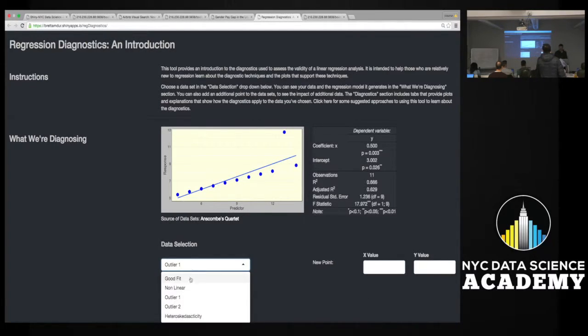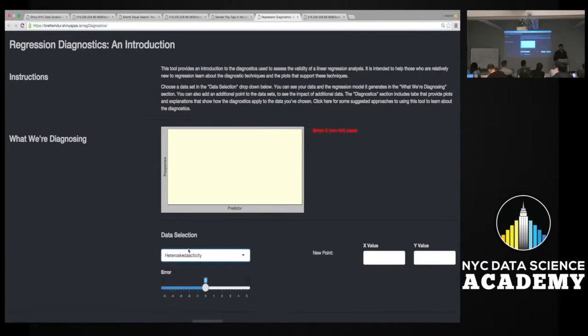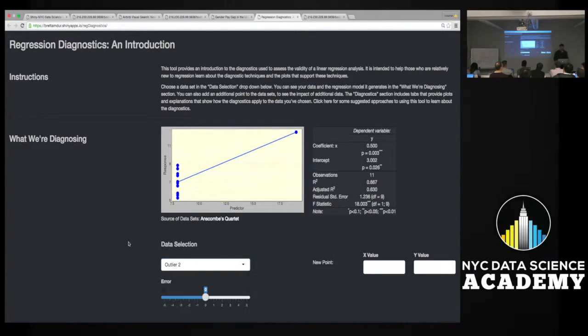And then finally, the fourth piece of Anscombe's dataset. Once again, same X coefficient, same intercept, but now we have a whole bunch of data points at the same X value. Only one is different, pulling the line up. Obviously we have concerns about the predictive value if the only thing generating that line is that one outlier X value.